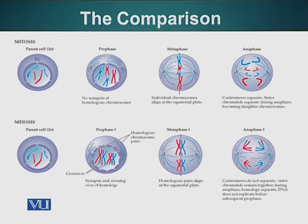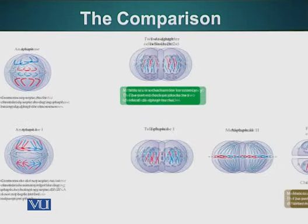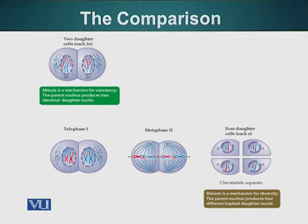In mitosis, after telophase, we have the end product — the daughter cells are formed. Here is the telophase; after the telophase of mitosis, we have the daughter cells, which are identical to the parent cell. However, in meiosis, the daughter cells that have formed have a different type of genetic information.